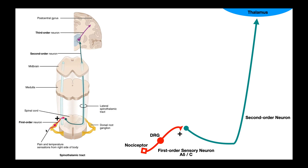Here we have our first order neuron coming into the dorsal root ganglia — here's the cell body of that first order neuron — and then it synapses here in the spinal cord with a second order neuron. The second order neuron goes to the opposite side of the spinal cord, then up the spinal cord and brain stem to the thalamus. And then there's a third order neuron that carries that information to specific parts of the brain, and you perceive pain. In red here, this is our first order neuron — it's a sensory unipolar type. The receptor out here in the periphery is our nociceptor — it detects pain type of information. Here's your axon leading to the cell body, which is contained in that dorsal root ganglion, and here's the axon that goes into the spinal cord and synapses with the cell body of the second order neuron. The first order neuron activates or stimulates the second order neuron — that's why we see the plus sign here.